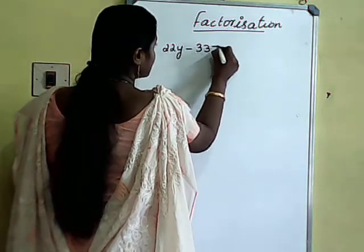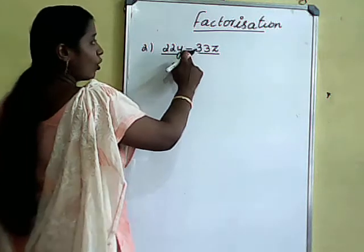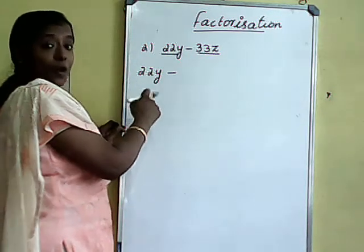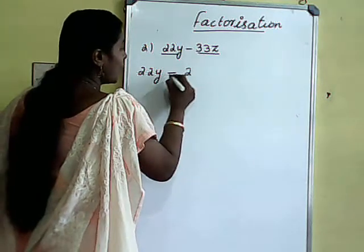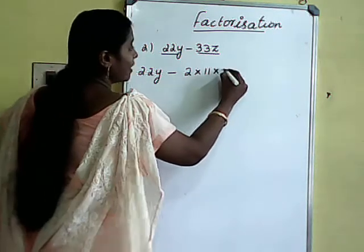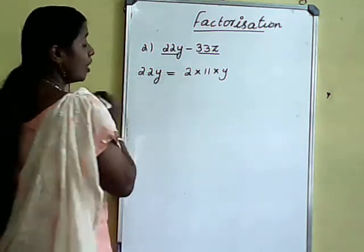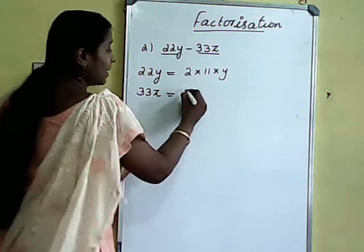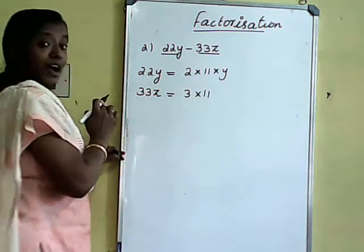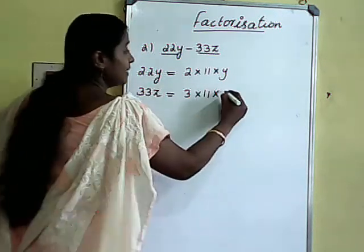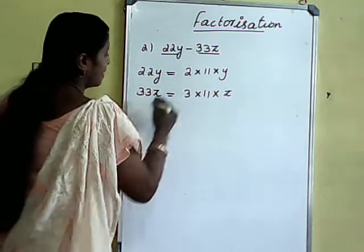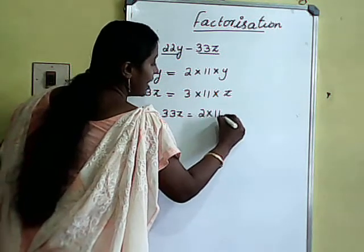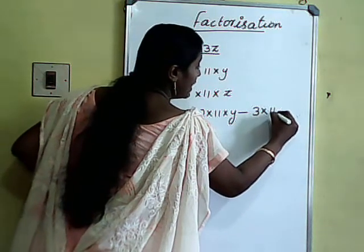Second question: 22y minus 33z. Two terms; the operation is subtraction. First, we want to write 22 as a product of primes — that is 2 into 11, and the variable is y. Then the next one, 33z: 33 equals 3 into 11, and 2, 11, 3 are prime numbers, with variable z. Combining: 22y minus 33z equals 2 into 11 into y, minus 3 into 11 into z.